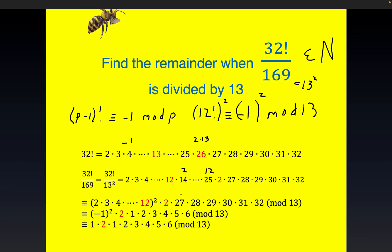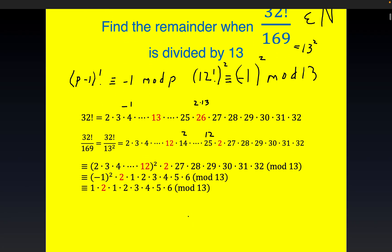Now notice 27 is congruent to 1, 28 is congruent to 2, so I wrote that down right here for you. So we reach this stage in the problem where all we have to do is reduce this relatively simple looking expression, modulo 13.